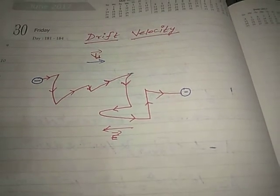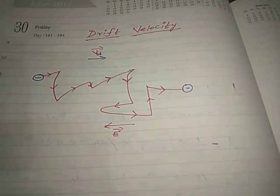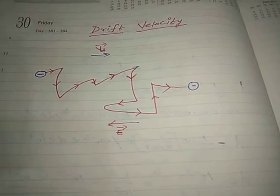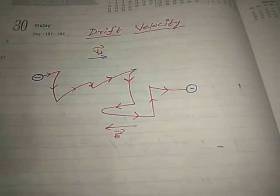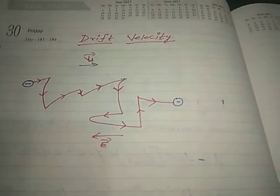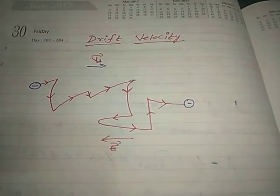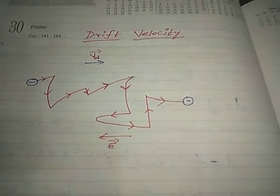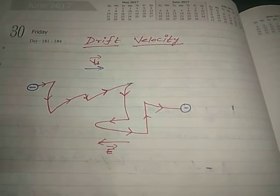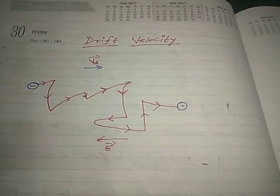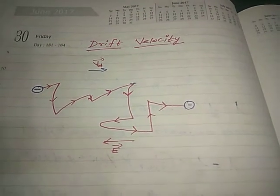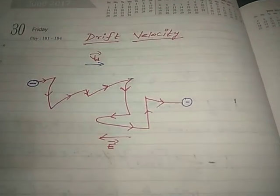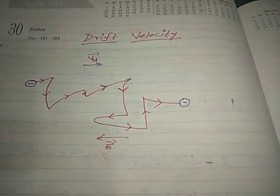So electrons are moving in all directions. If we calculate the net velocity of all electrons, each electron has its own velocity. So the net velocity — the net direction of velocity — is said to be zero. When an electric field is set up, then only the electrons move in a desired direction, which is opposite to the direction of the electric field.